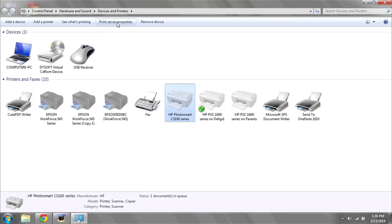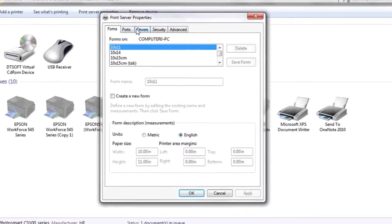Your screen may look a little different than mine as you may have a different printer. Highlight it by left clicking and then at the top click print server properties.